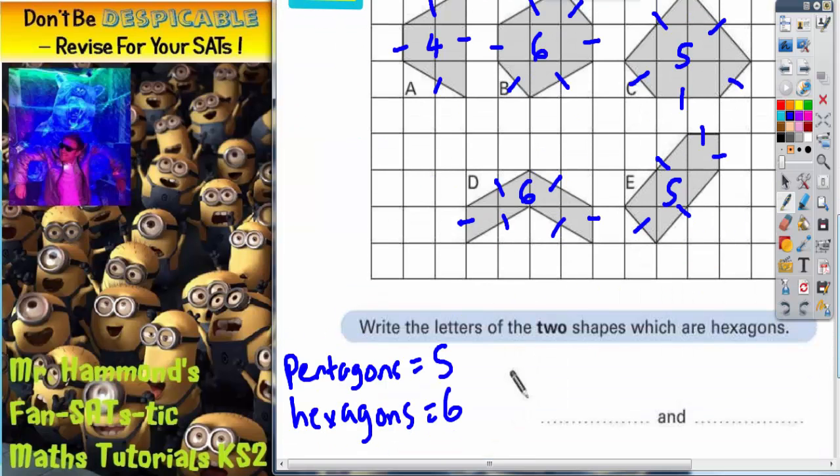So let's check the question again. Write the letters of the two shapes which are hexagons. Hexagons have six sides, and you can see that the two shapes with six sides are shape B and shape D. So B and D are what we need to put in there.